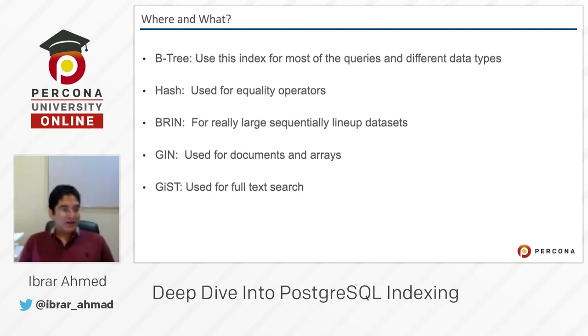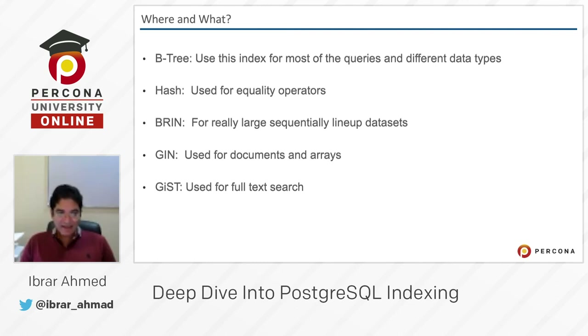GIN index is used for documents and arrays. So when you have a JSON document and you have arrays, and you want to use some kind of an index, then GIN is the better option for you.